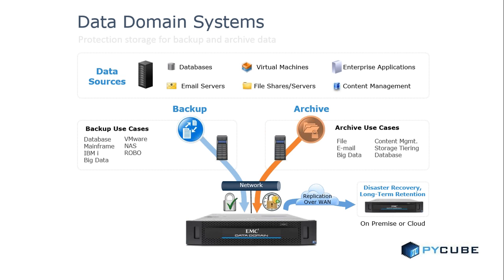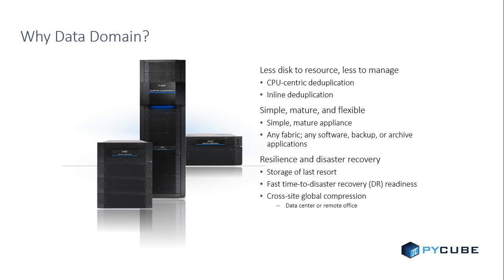Let's examine how Data Domain systems are the ideal protection storage platform for backup and archive data. On the top here, you can see a variety of data sources including databases, email servers, virtual machines, and more. One of the main strengths of Data Domain systems is that all of these data sources and a broad range of backup and archive use cases can be protected on a single system. One of the key differentiators Data Domain systems offer is the ability to encrypt data in line, meaning data is deduplicated then encrypted in real time as it is written to disk. Furthermore, on the archive side, Data Domain systems can meet a variety of U.S. and international compliance regulations for archive data, including SEC 17A-4F. Finally, all data sent to a Data Domain system can be efficiently replicated to a secondary site for disaster recovery and long-term retention. This secondary site can be on-premise at your own DR site, or could be in the cloud at a service provider's facility.